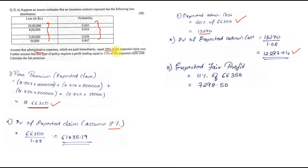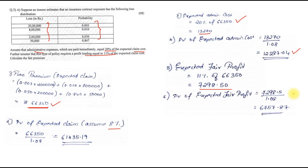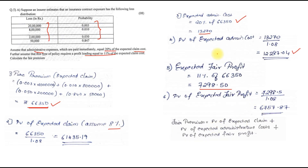Step 5: find the expected fair profit, which is 11% of expected claim cost = 11% of 66,350 = 7,298.50. PV of fair profit = 7,298.50 ÷ 1.08 = 6,757.87. The fair premium is the sum of PV of expected claim, PV of admin cost, and PV of fair profit: 61,435.19 + 12,287.04 + 6,757.87 = 80,480.10. I hope everyone understood all three sums from this question paper. Thank you.